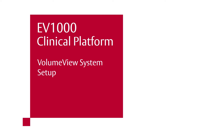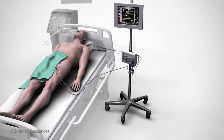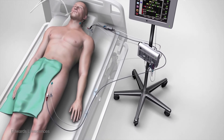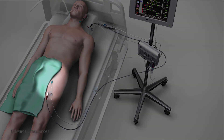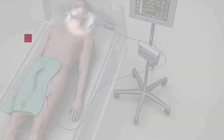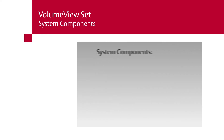Volume view system setup. Before monitoring can begin, the patient must be prepped with the following: a volume view femoral arterial catheter inserted into the right or left femoral artery, and a central venous catheter inserted into the right or left IJ or subclavian vein. Confirm that the following components of the EV1000 clinical platform are present and in good condition.